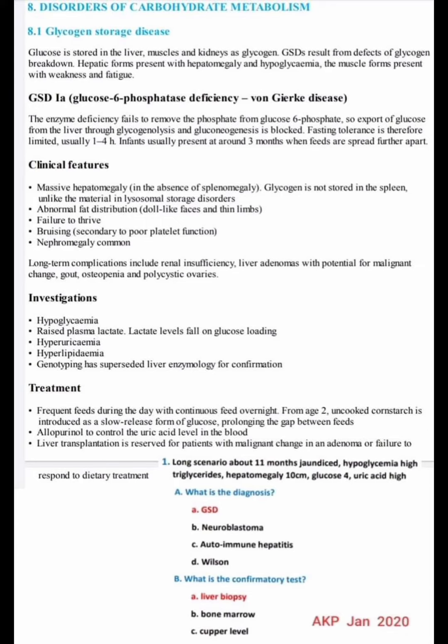Treatment involves frequent feeds during the day with continuous feeds overnight. From age 2, uncooked corn starch is introduced as a slow-release form of glucose, prolonging the gap between feeds. Allopurinol is used to control uric acid levels. Liver transplantation is reserved for patients with malignant change in an adenoma or failure to respond to dietary treatment.